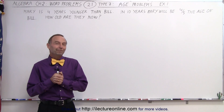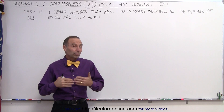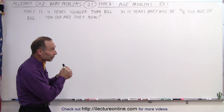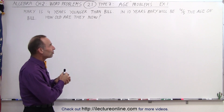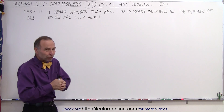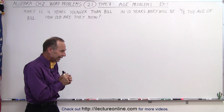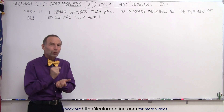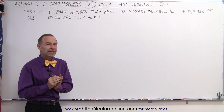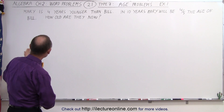Welcome to iLectureOnline. The next type of word problem we're going to deal with is age-related problems. Typically two or three people and their ages are related to one another, and those types of word problems take a very special technique. Here's our first example.